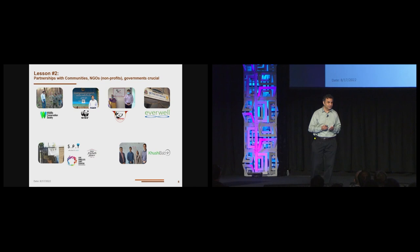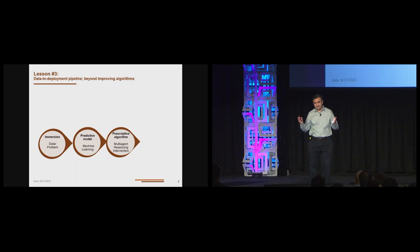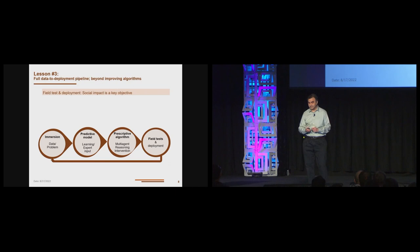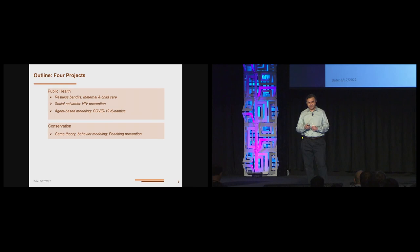These may seem like very different application areas but they are all tied together because the underlying models and research is based on common multi-agent systems research. A second lesson is all of this work in AI for social impact requires partnerships with communities, non-profits, and governments. We want to avoid being gatekeepers to AI technology for social impact. Lesson three is the entire data to deployment pipeline is important when we think about AI for social impact. We begin our work by immersing ourselves in the domain, trying to understand the kind of data that are available, the kind of problems that a non-profit faces.